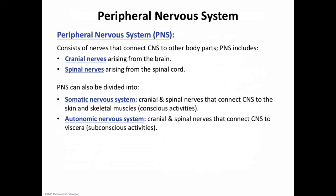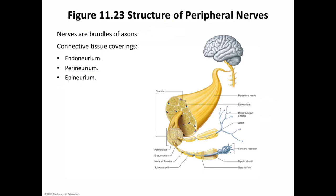Make sure you have not forgotten the divisions of the peripheral nervous system. The connective tissue coverings of nerves are as follows: the outermost covering is the epineurium; just inside that is the perineurium, which encapsulates the fascicles; and each individual axon is covered by the endoneurium. This is the same way you learned about the connective tissue sheaths that cover muscle.